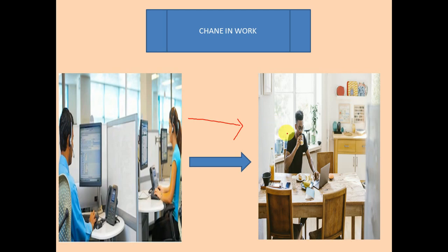For example, a man working from home can spend time with his family and also do household work along with office work. A second change in work culture is outsourcing — we have started outsourcing our work to someone who is more efficient and can do the work at a cheaper price. Outsourcing has become a significant part of the working pattern.